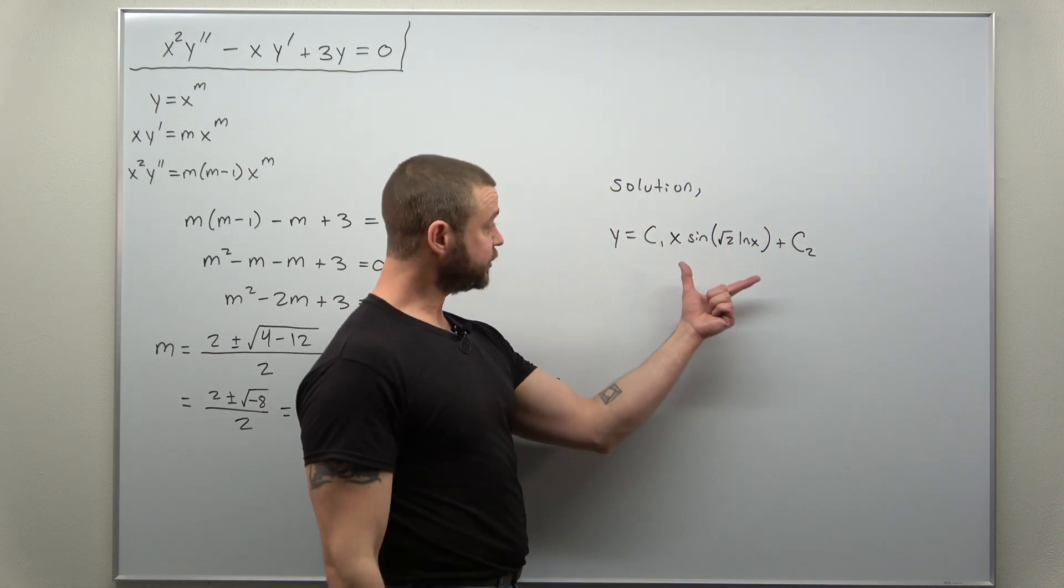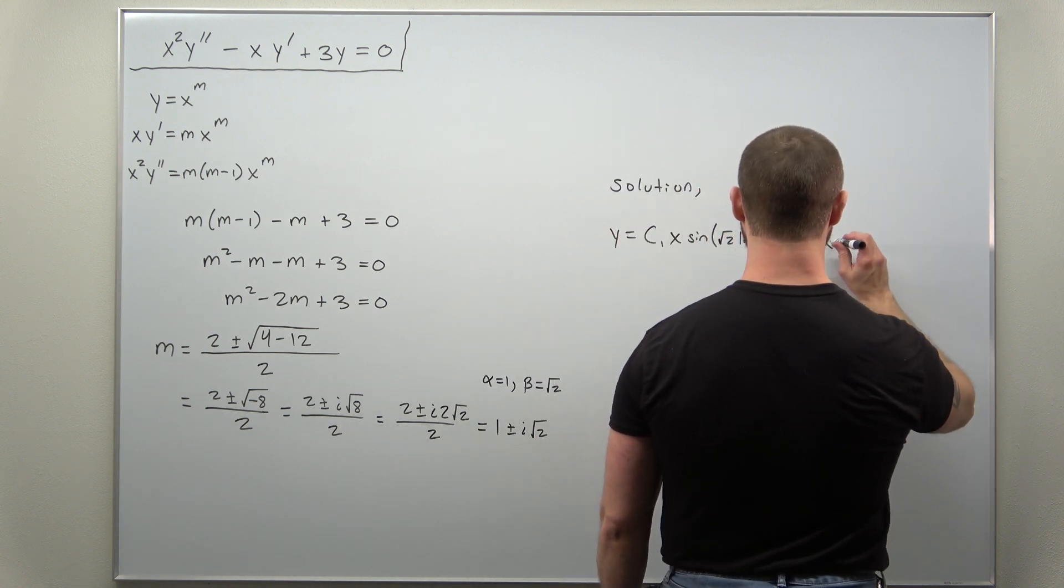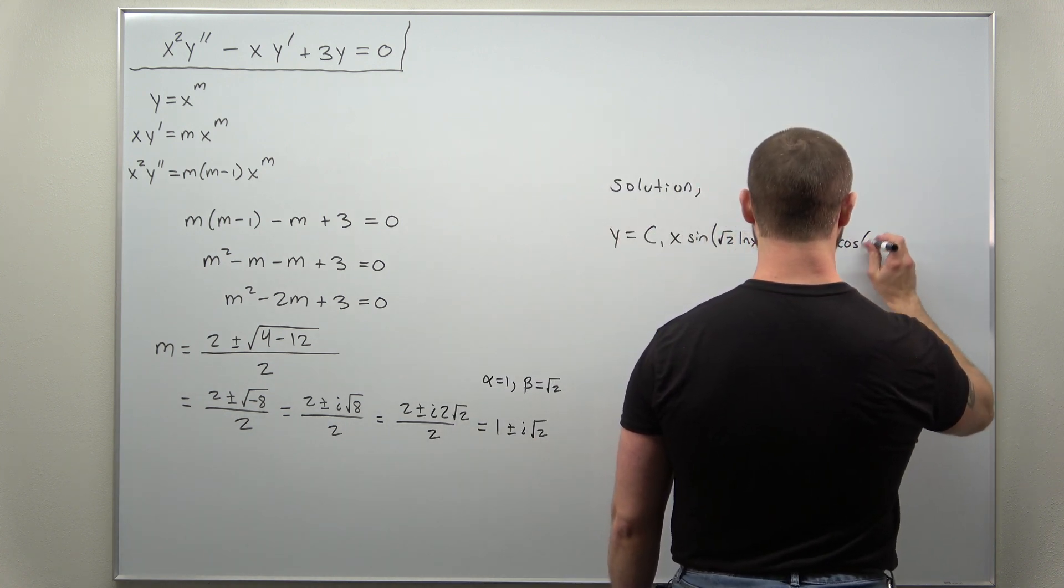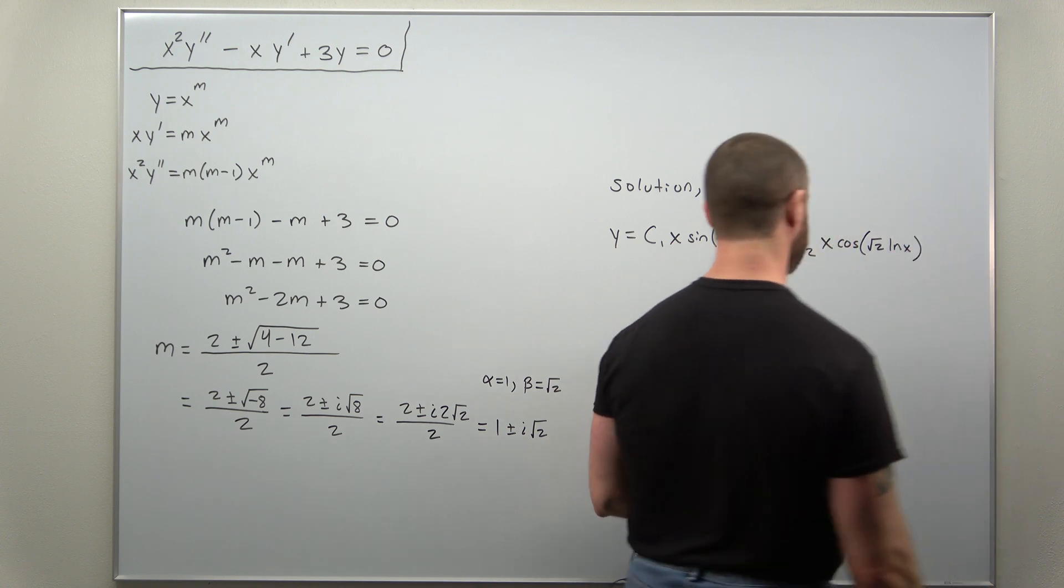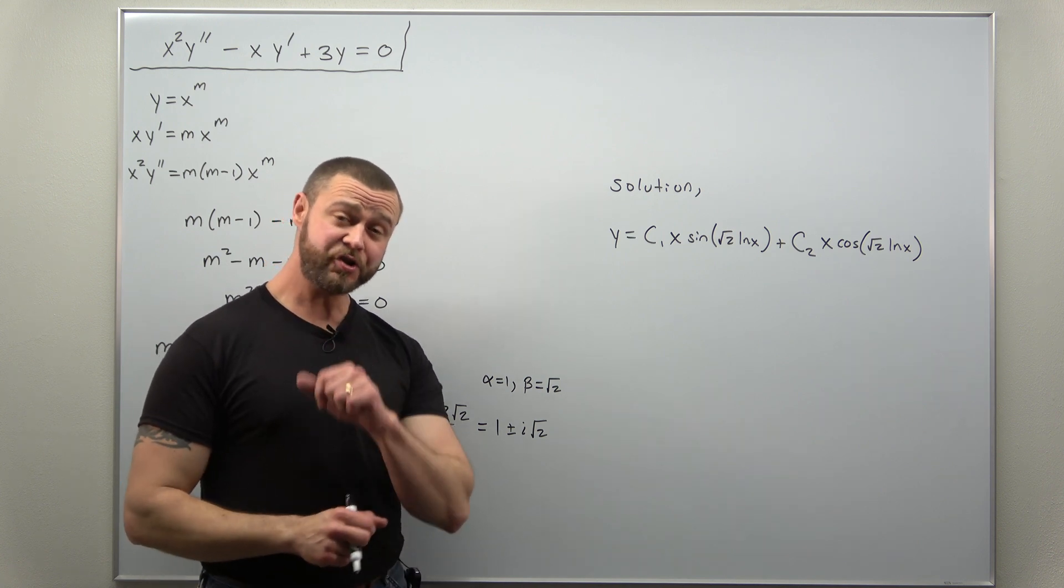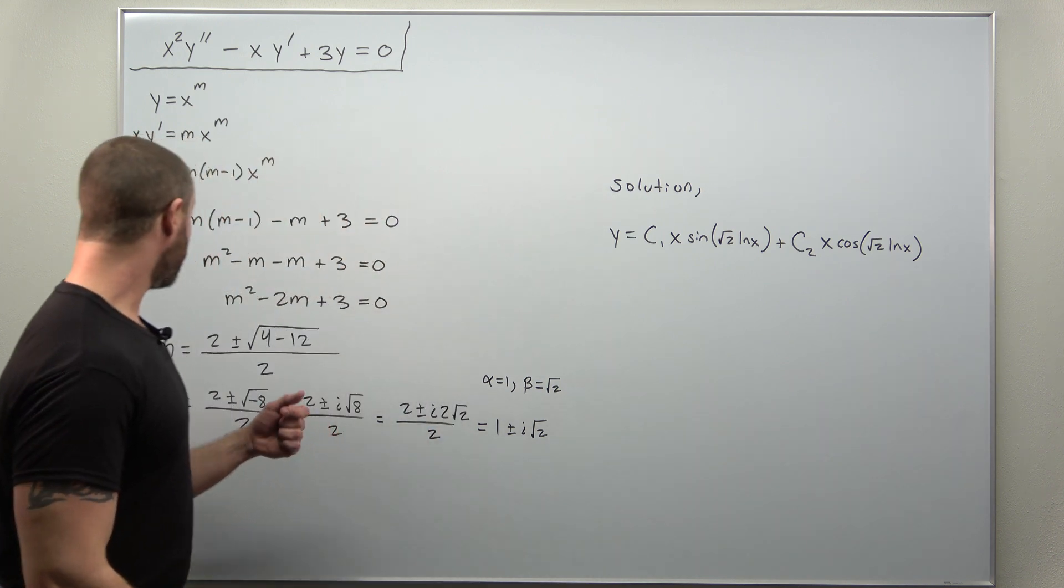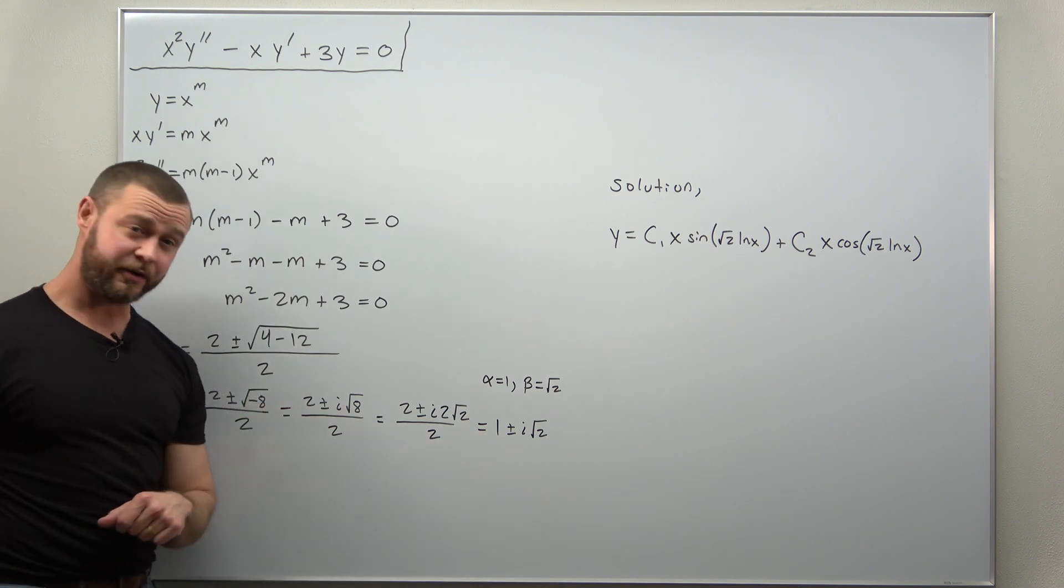And you have a similar term here, but with cosine. So plus C2 x cosine of square root of 2 natural log of x. And that completes our solution here in the case where our auxiliary equation gave us complex values.